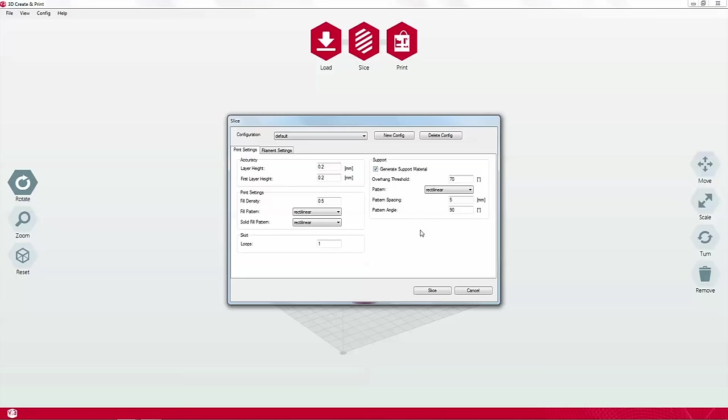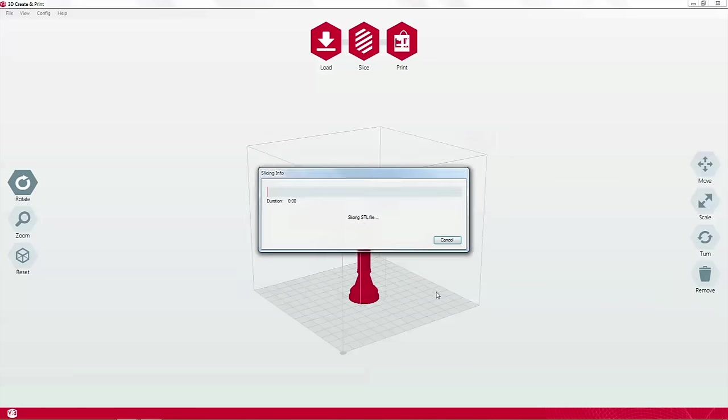Now you simply click slice. Once you've clicked slice, you cannot make any further changes to the print specifications, but you can go backwards if you want to.